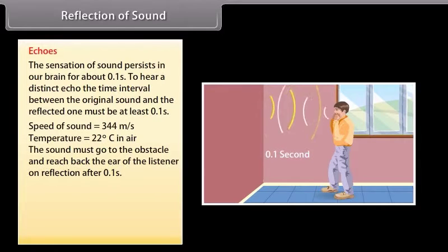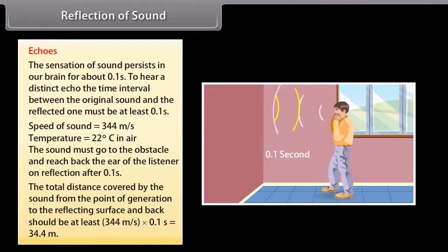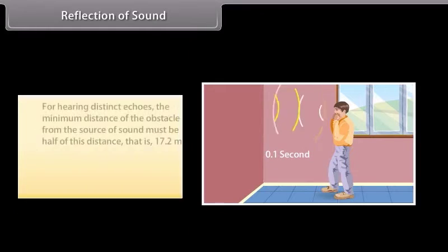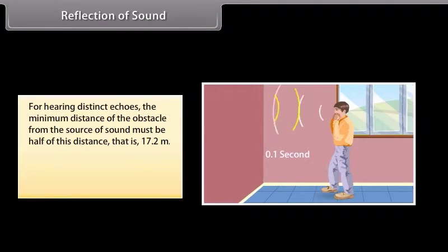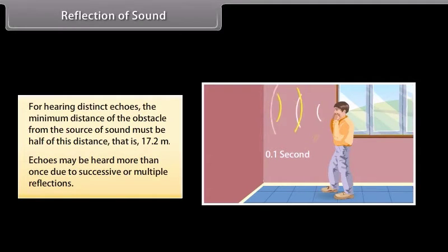If we take the speed of sound to be 344 meters per second at a given temperature, say 22 degrees Celsius in air, the sound must go back to the obstacle and reach back the ear of the listener on reflection after 0.1 second. Hence, the total distance covered by the sound from the point of generation to the reflecting surface and back should be at least 344 meters per second into 0.1 second, is equal to 34.4 meters. Thus, for hearing distinct echoes, the minimum distance of the obstacle from the source of sound must be half of this distance, that is 17.2 meters. This distance will change with the temperature of air. Echoes may be heard more than once due to successive or multiple reflections.